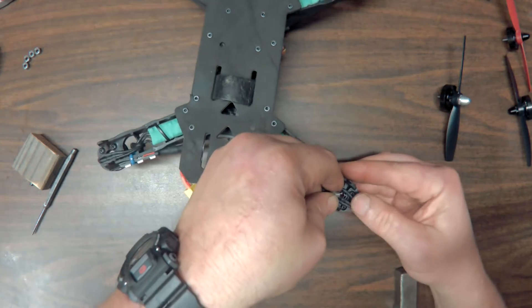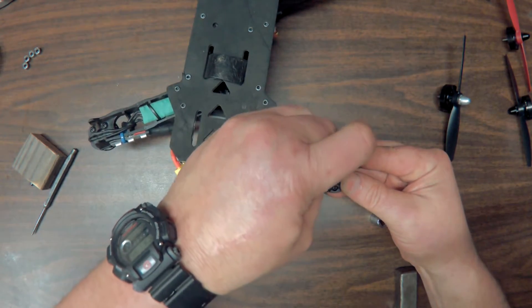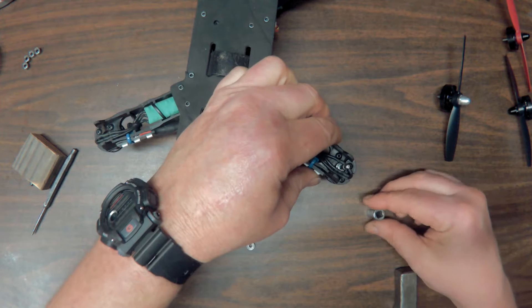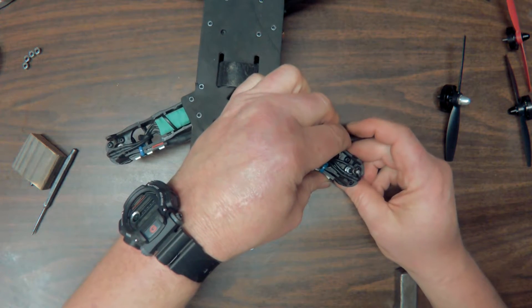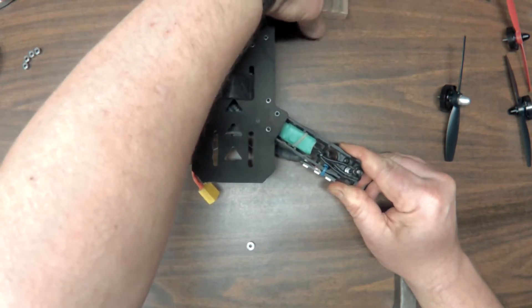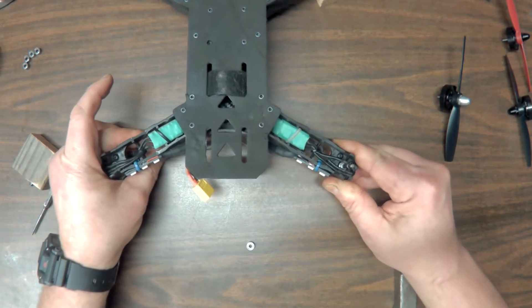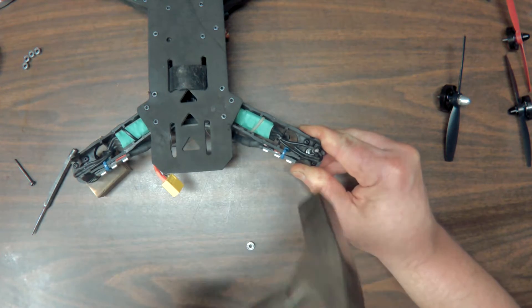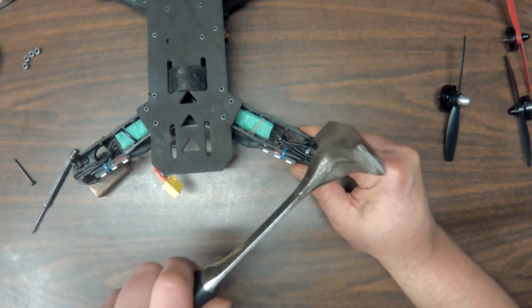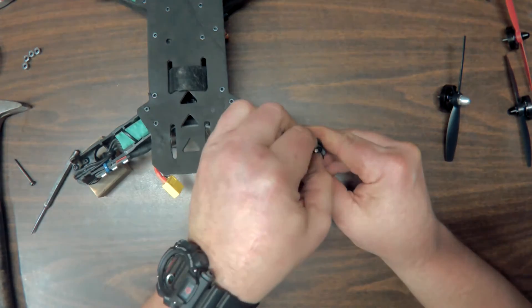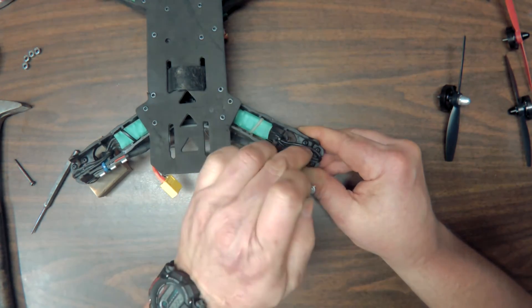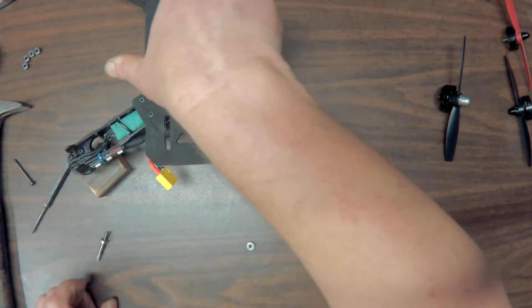Like that. And then put the bearing in. Make sure that's centered. Position your socket again. And tap it in. And you know when it's seated because it is flush with the bottom of the motor, like so. If you can see that. So that's that one.